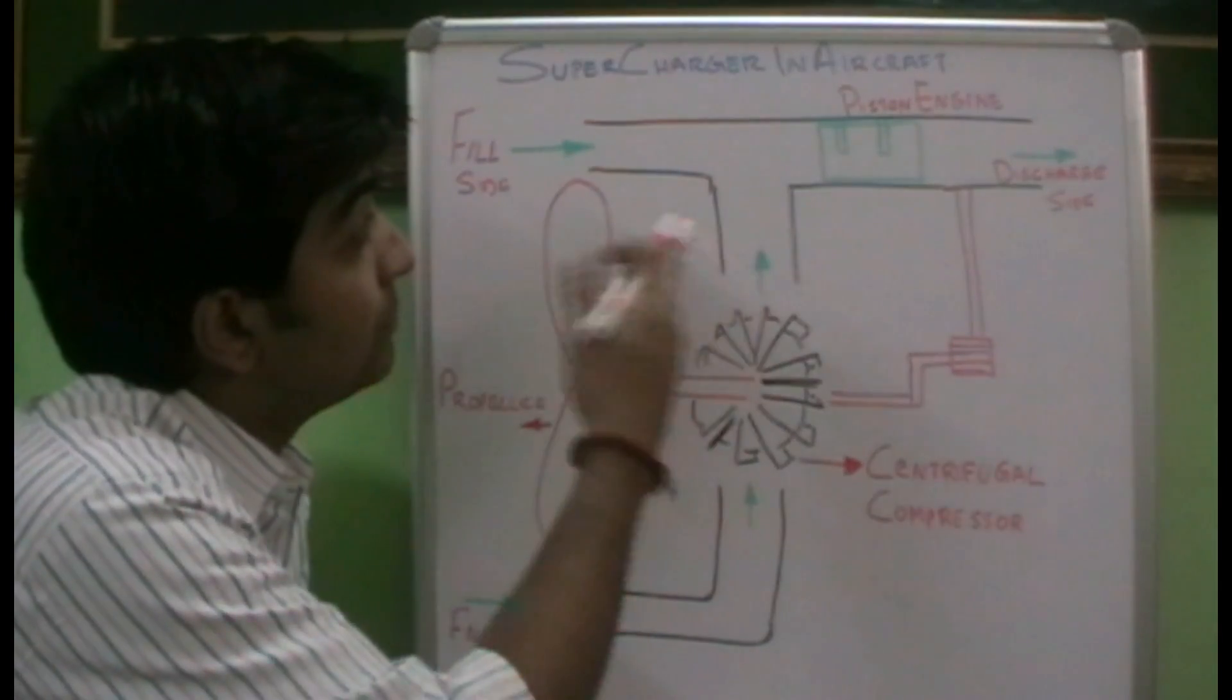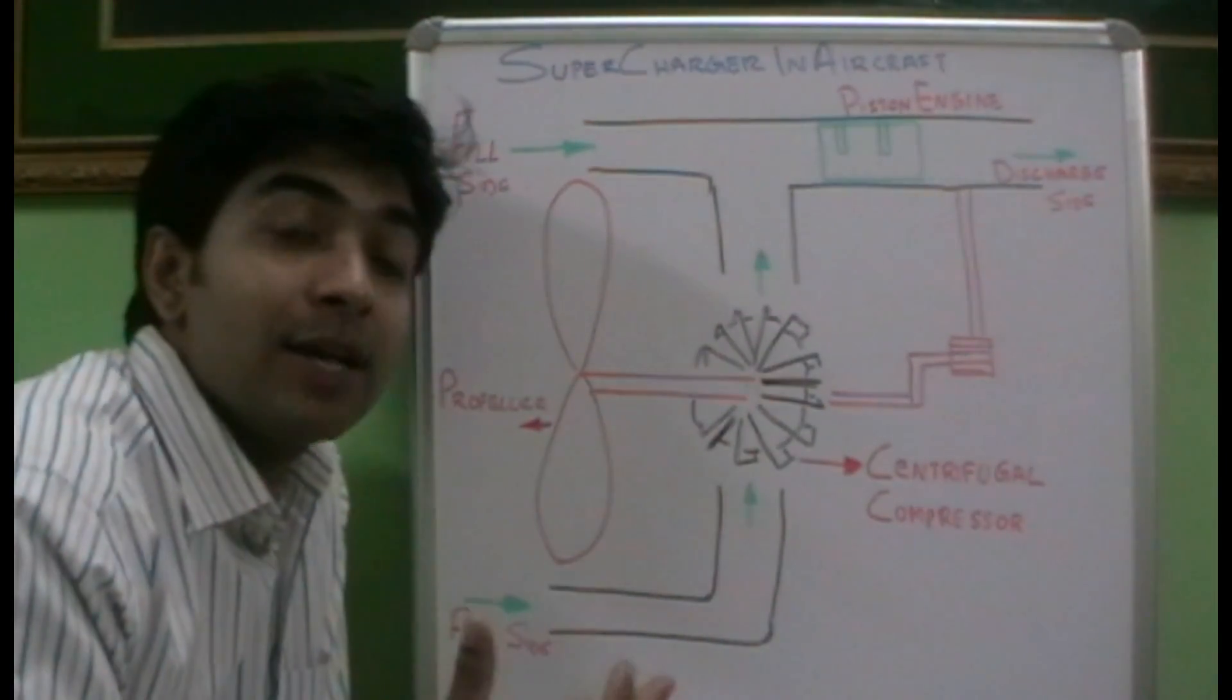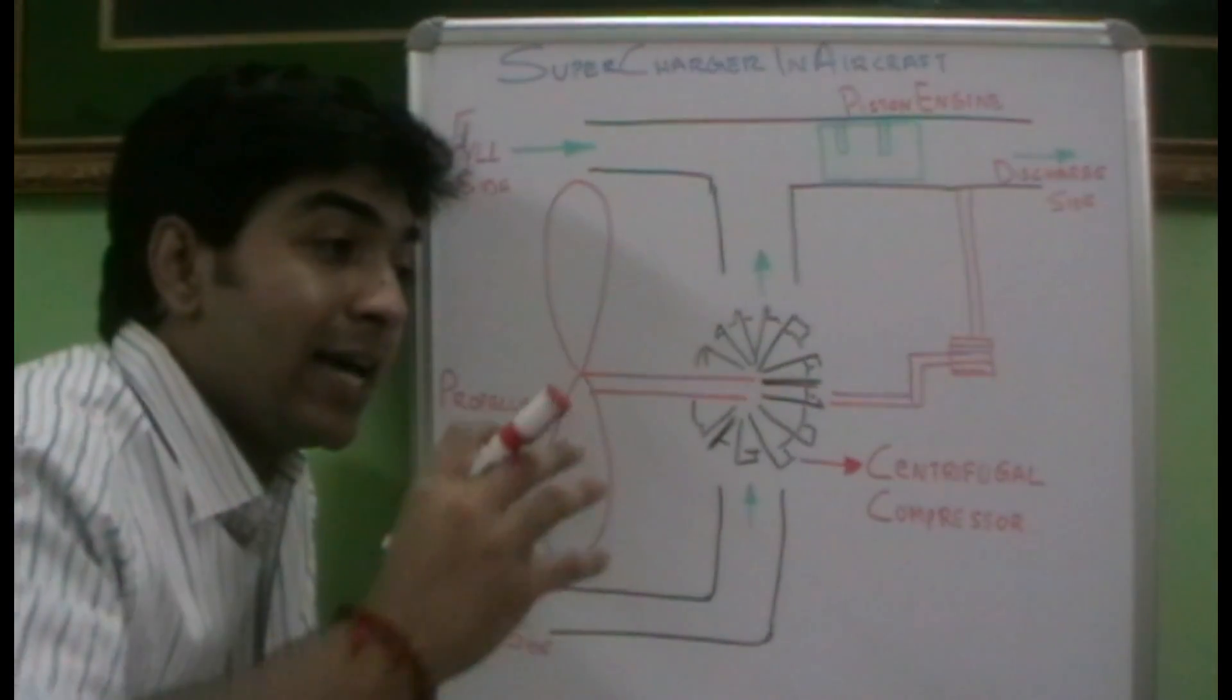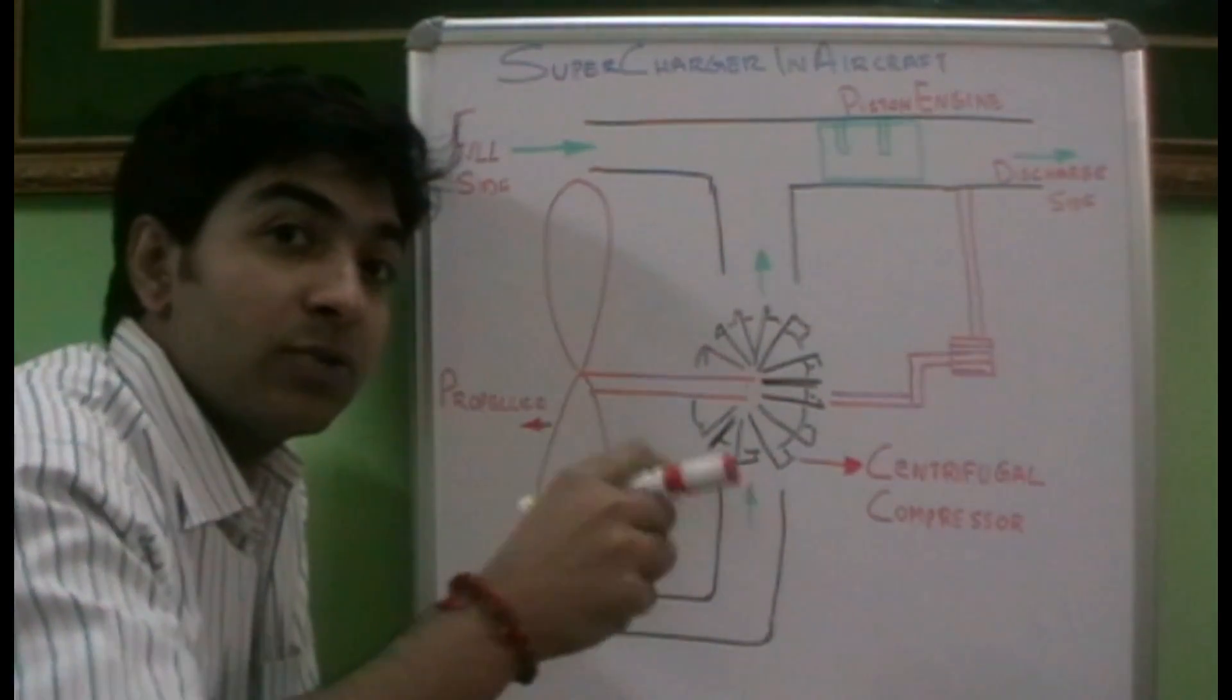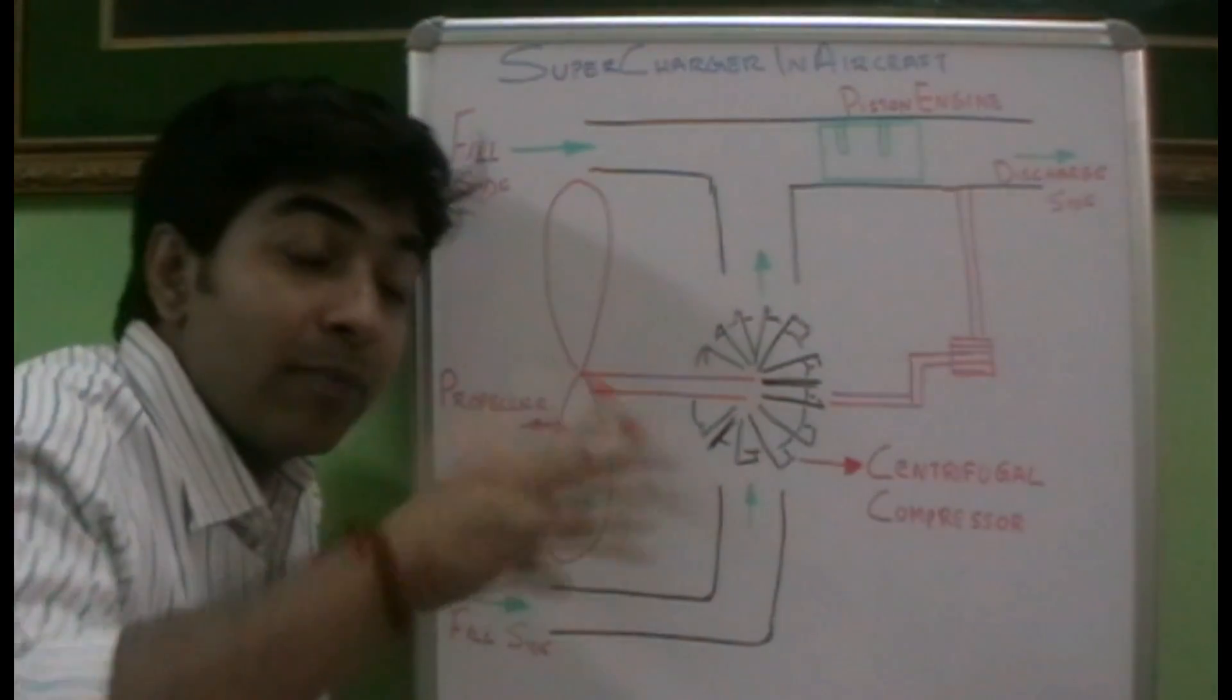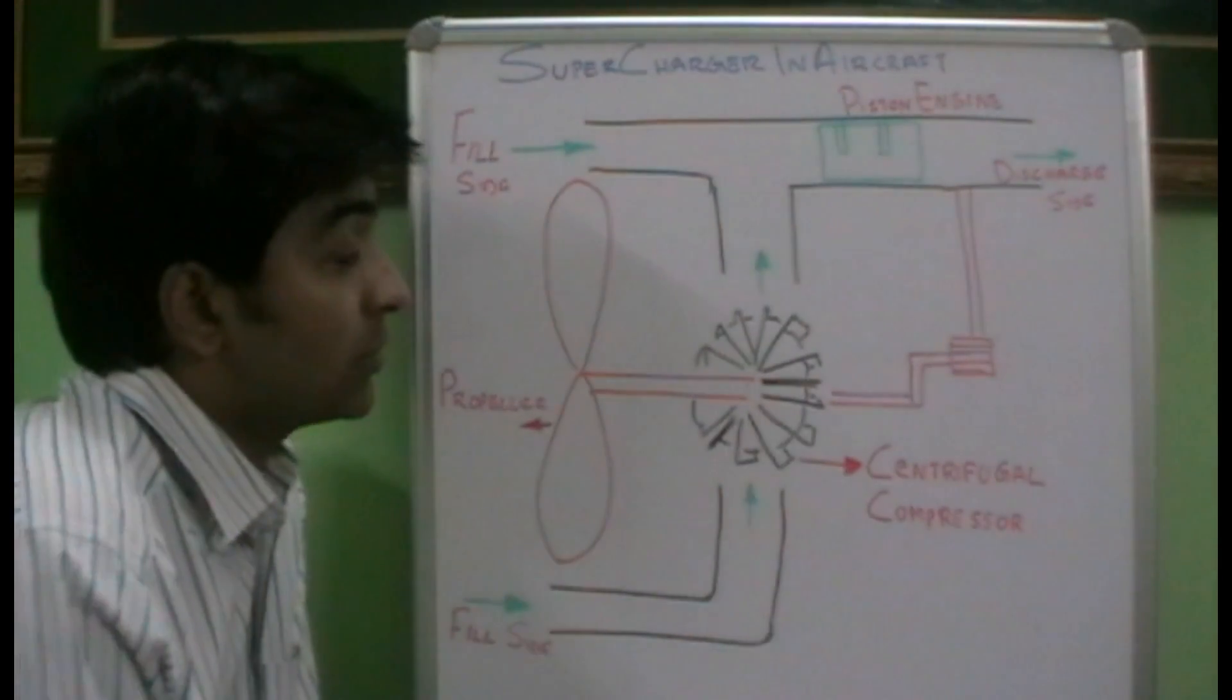With a supercharger used in an aircraft engine, it can increase the power of the engine or the torque produced by the engine. A supercharger provides more pressurized air into the inlet manifold of the engine, so that more fuel can be burned and more combustion can be produced, resulting in more horsepower and more torque.